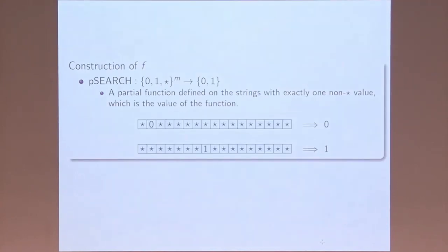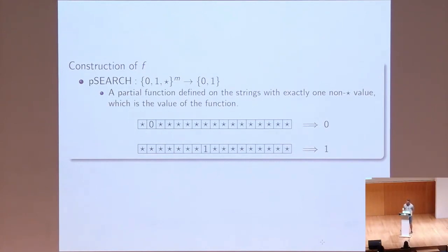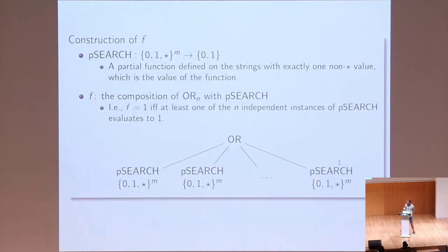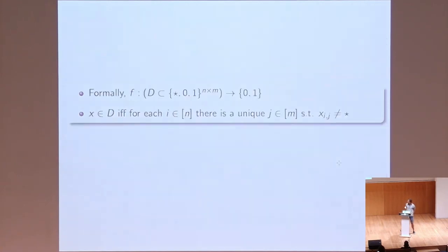So how to define such a function? The most important tool we use here is p-search function, which is quite convenient for lower bounds. So p-search function is defined on strings from this whole bit, and on strings where there's only one, only single non-star element. And this non-star element then is the value of this p-search function. And our function f is simply the composition of or and p-search function. So function f is one if and only if at least one of these p-search instances evaluates to one.